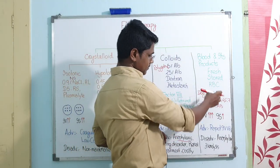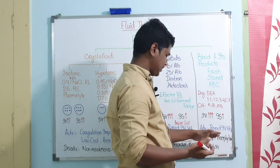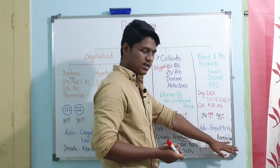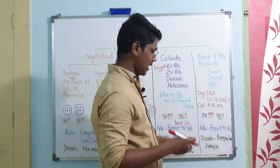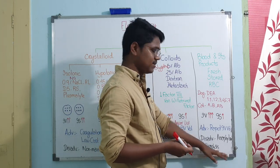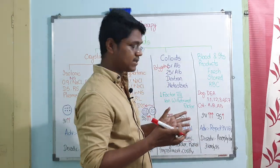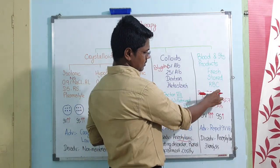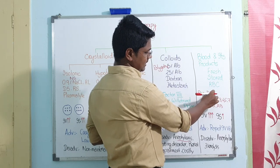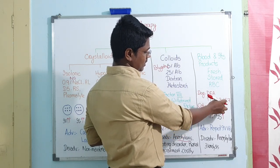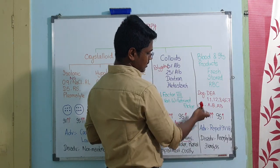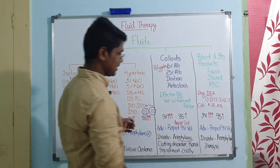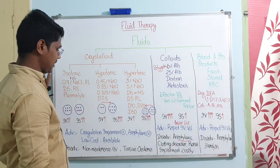Blood products - advantage is rapid intravascular volume restoration. Disadvantage is anaphylaxis and hemolysis. Anaphylaxis because there will be potent allergens; hemolysis because there may be blood mismatch. Remember blood groups: in dogs it is Dog Erythrocyte Antigen (DEA) - whether 1.1, 1.2, 1.3, 4, 5, 7. In cats: A, B, and AB. In dogs, DEA 1.1 is the most antigenic blood group, so you have to be very careful.